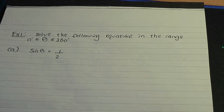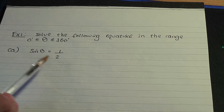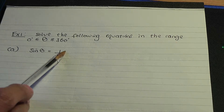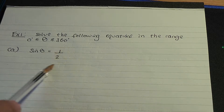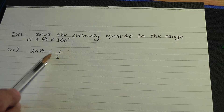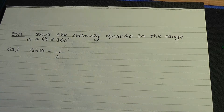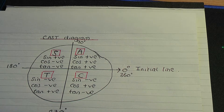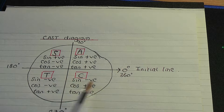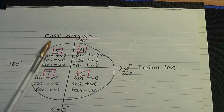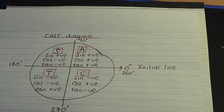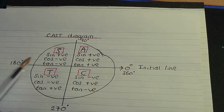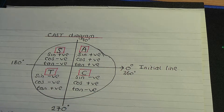The first thing to note is that sine theta equals plus half. The plus half is significant — it's very important. This plus half means, if we go to the CAST diagram, plus half means we plot the solution where sine is positive. Sine is positive in the all quadrant (the first quadrant) and in the sine quadrant (the second quadrant).